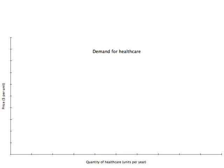The main piece of knowledge assumed of students, which is central to the chapter, is the basic economic analysis of the demand side of the market. On the x-axis we've got the quantity of health care — units per year. If we're talking about physician services, that's doctor's office visits per year; if we're talking radiology, it's the number of x-rays per year. On the y-axis we've got the price per unit of that good.